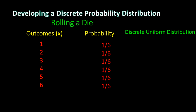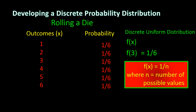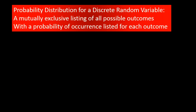For discrete random variables, we use the probability function f(x) to denote the probability of each random variable. For example, if x is rolling the number 3, then we would write f(3) for the probability of rolling a 3, which is equal to 1/6. For a uniform probability distribution, the probability function is described as f(x) = 1/n, where n is the number of possible values. So if there are 6 possible outcomes, as in the case of rolling a die, then f(x) = 1/6 for all of them. A probability distribution for a discrete random variable is a mutually exclusive listing of all possible numerical outcomes for the random variable and their associated probability of occurrence — a listing of all the possible outcomes of the die and the associated probability of its occurrence.